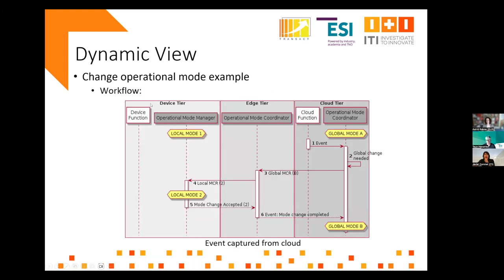This is an example of a workflow — in this case, an example for the chain operational mode. Here you can see a global chain operational mode rising from the cloud due to an event. You can see the different steps required to implement this capability, identifying the different architectural components involved. The request for the global chain operational mode is propagated to the other tiers.